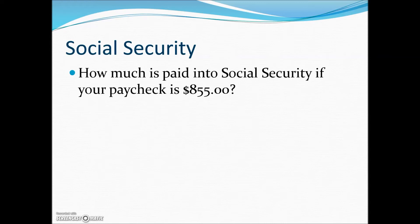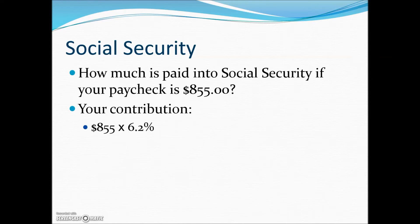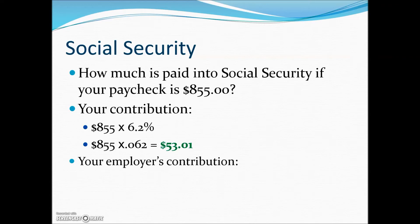Let's take a look at an example of how Social Security taxes work. If you had a paycheck of $855, your Social Security tax would be found by multiplying your gross wage by the Social Security tax rate of 6.2%. So you would have $53.01 deducted from your gross wage, and the employer would pay an additional $53.01.